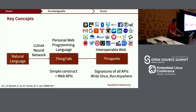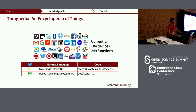Thingpedia is our encyclopedia of things. For each thing, device, or service, it collects both the API and how the API can be used in small snippets of ThingTalk with the corresponding natural language. For example, you can mark that you can use the search function to search tweets by hashtag, or use the word 'tweet' to make a tweet on Twitter. Currently, Thingpedia has 104 devices and 249 functions.